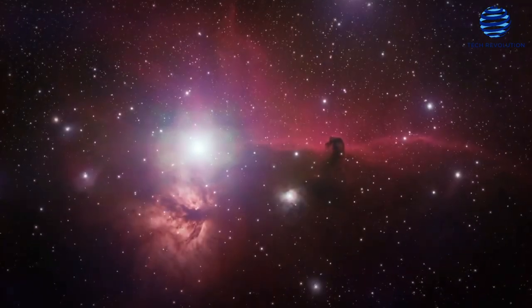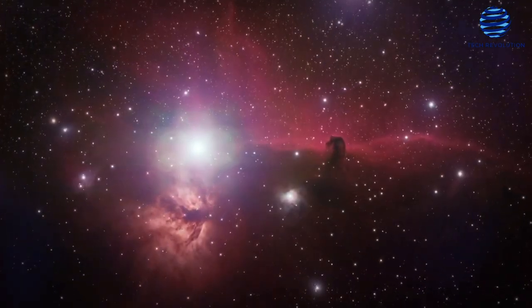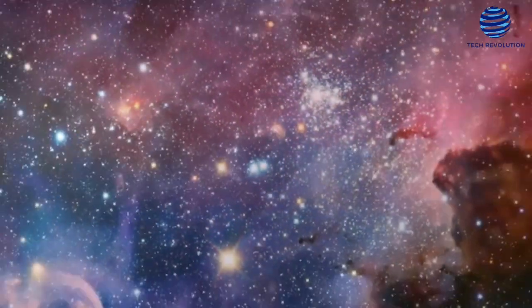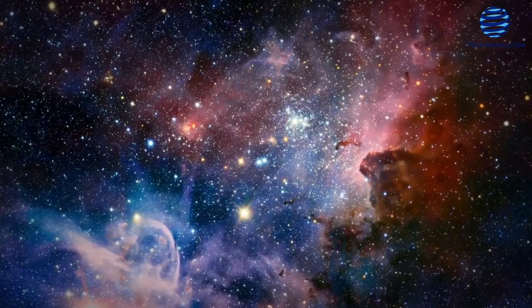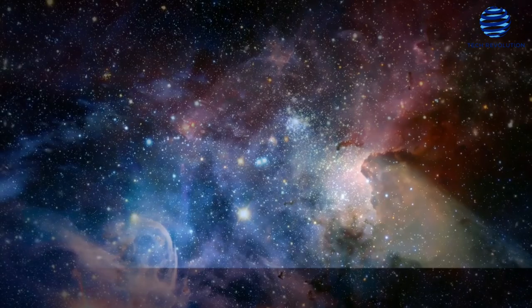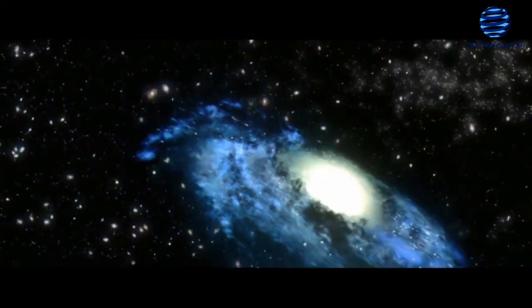These items, known as Kuiper Belt objects or trans-Neptunian objects, vary greatly in color, shape, size, groupings, and geological and atmospheric activity.